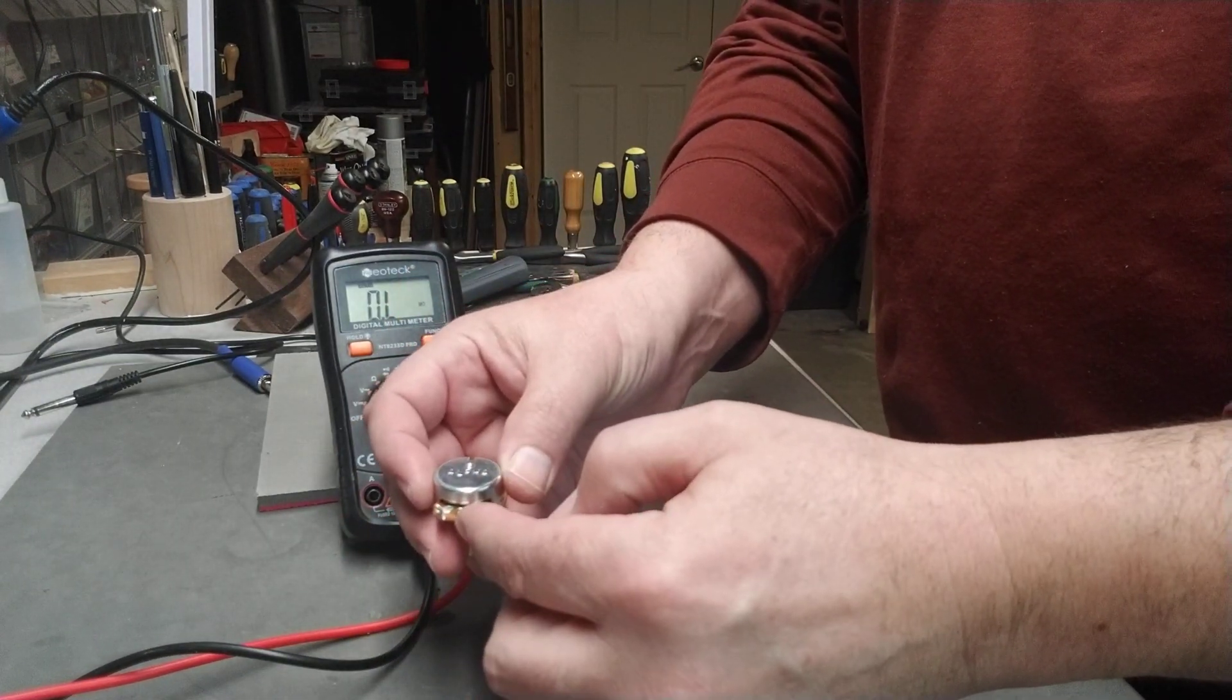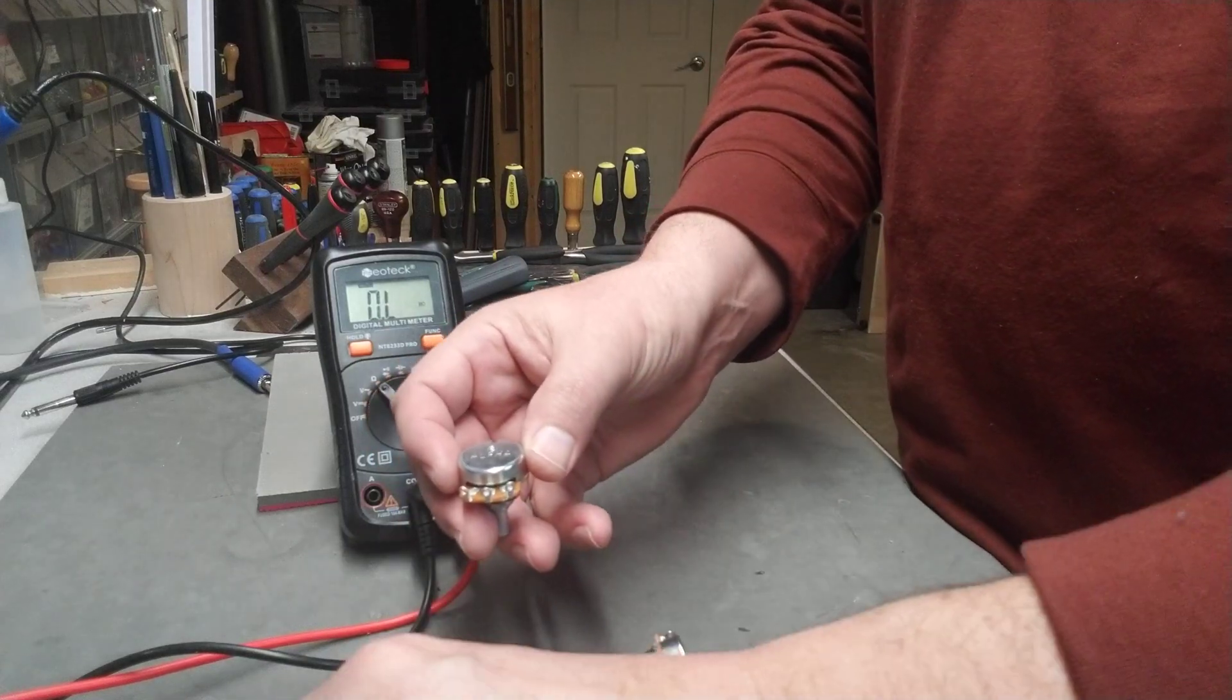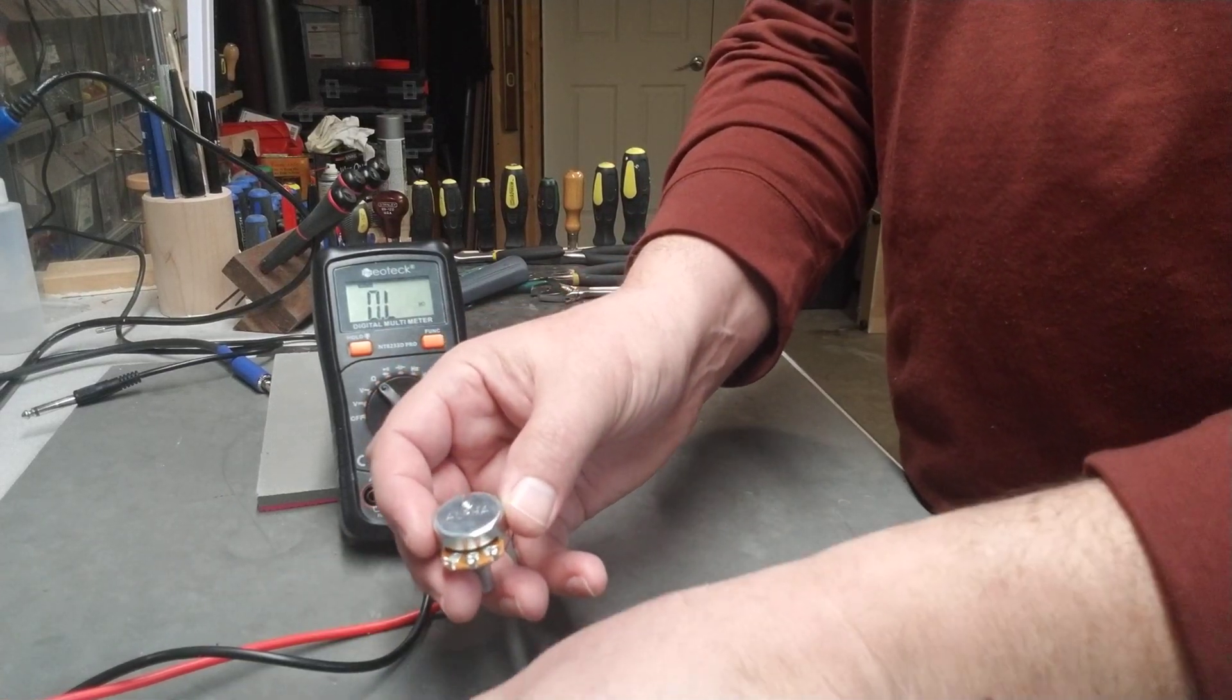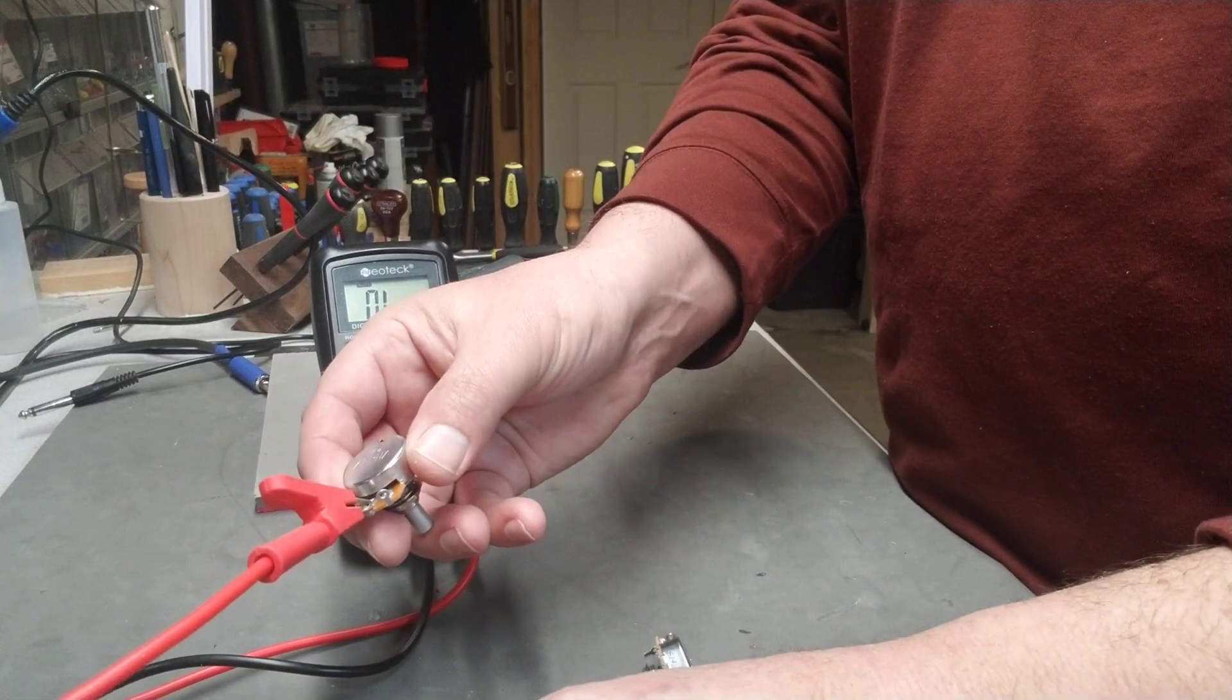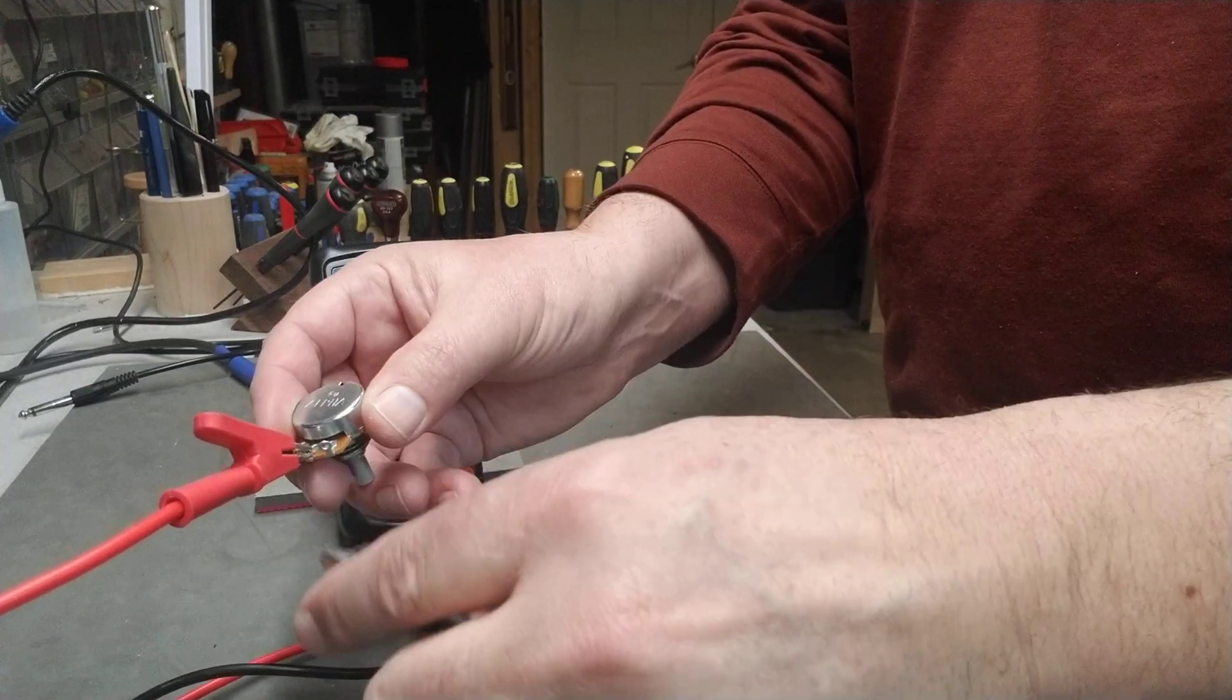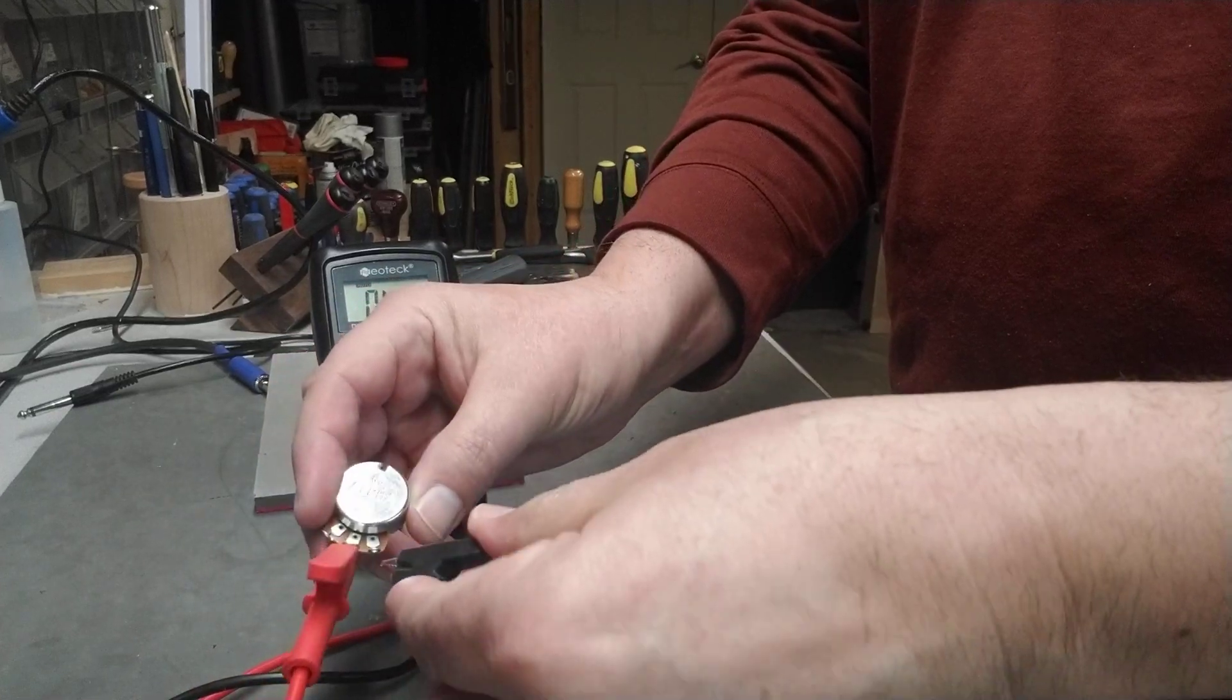So the middle lug is going to be your output. I'm going to put the hot on that one and then we're going to take the black and put it on the right hand lug.